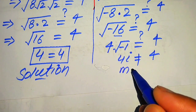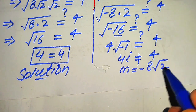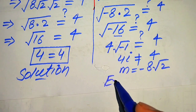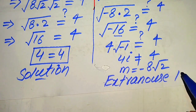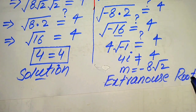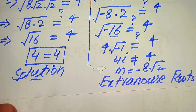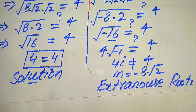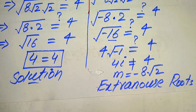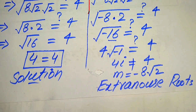Therefore m equals −8√2 is the extraneous root of the given equation. The root that does not satisfy the given equation is called the extraneous root. So m equals 8√2 is the solution of the given equation, and m equals −8√2 is the extraneous root. This is the final answer. Thank you so much for watching this video, please subscribe to my channel for more exciting videos.